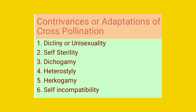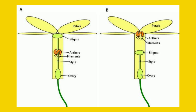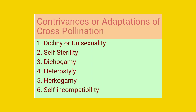The fourth condition is called heterostyly. Heterostyly is the condition where there are different lengths in the stamen and the style in the same bisexual flower. In some flowers the style is longer than the stamen, and in some flowers the stamens are longer than the style. In both cases it becomes difficult for the bisexual flower to undergo self-pollination, and therefore such flowers undergo cross pollination. One such example is primrose.